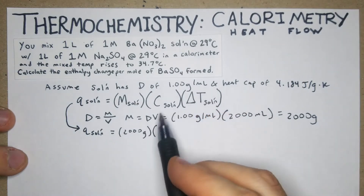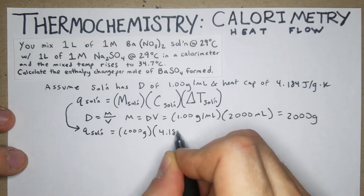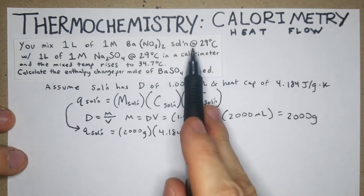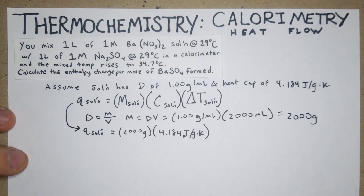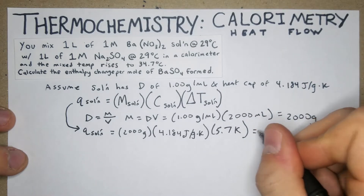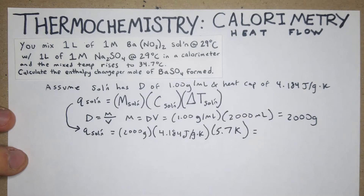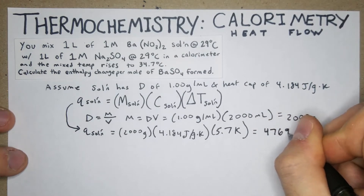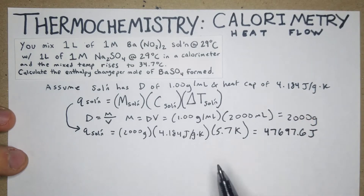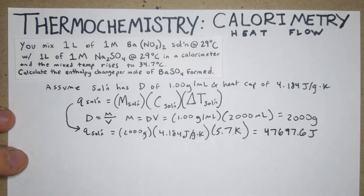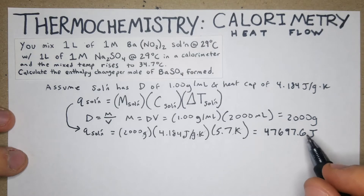Now q_solution = 2000 g × 4.184 J/(g·K) × ΔT. The temperature change is 34.7 − 29 = 5.7 K. That gives us q_solution = 47,697.6 joules. We can double-check: grams cancel, kelvin cancels, leaving joules.